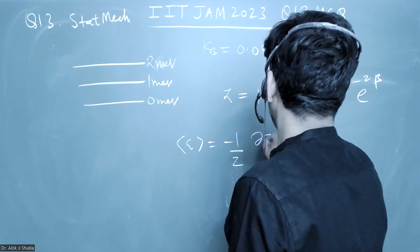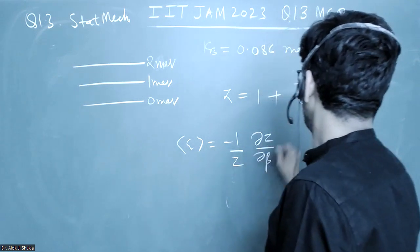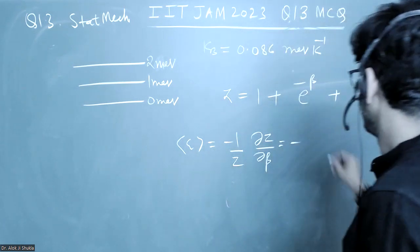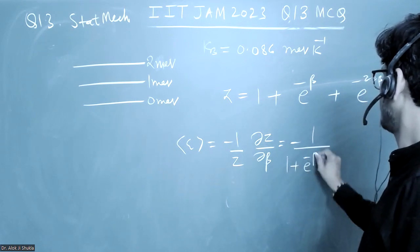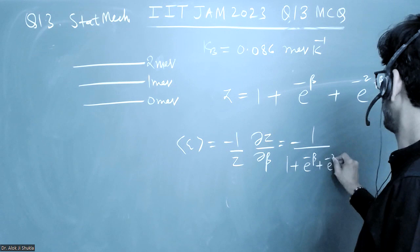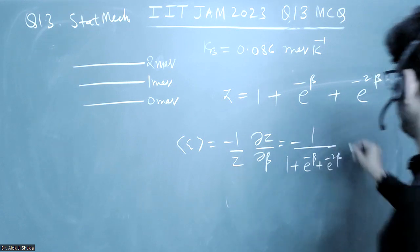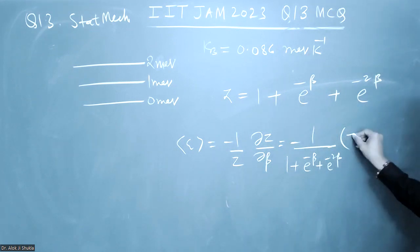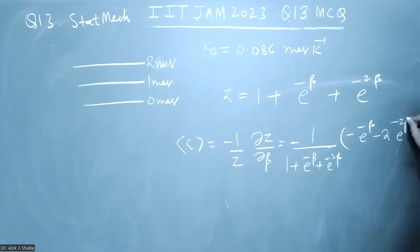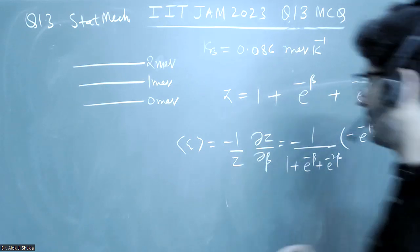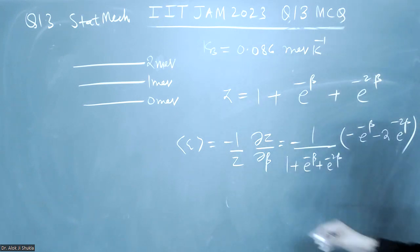So it will become minus 1 upon 1 plus e to the power minus beta plus e to the power minus 2 beta. Now when you put the value of beta, the value of beta which is like this,